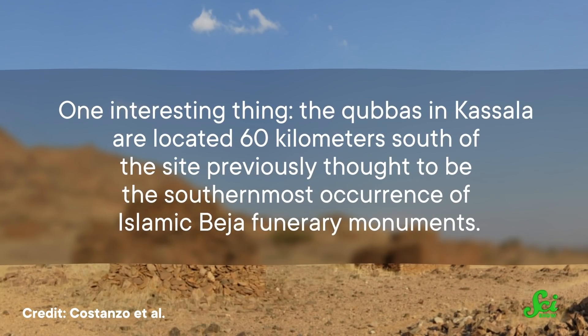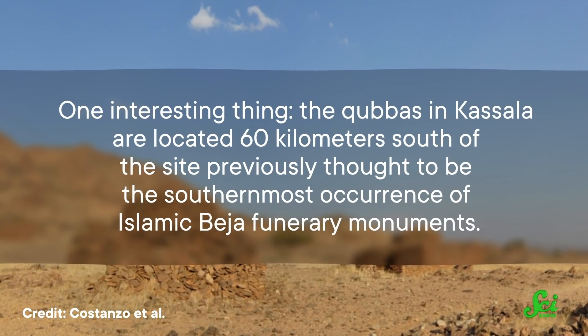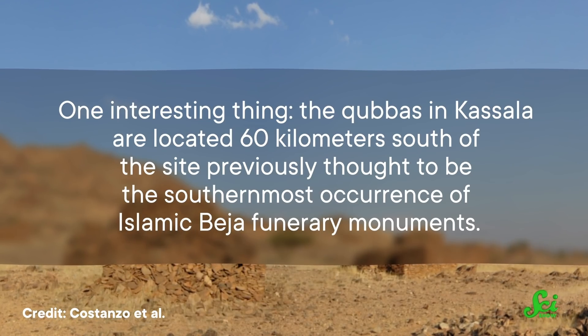One interesting thing: the kubas in Kassala are located 60 kilometers south of the site previously thought to be the southernmost occurrence of Islamic Beja funerary monuments. Which means that scholars underestimated the number of kubas in the region and their location. The Beja people have settled in the region since time immemorial, and ancient written records support them being in the region before 2,000 years ago — so the kubas and tumuli might be more culturally connected than researchers previously thought.